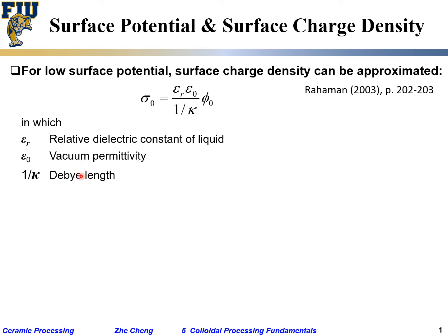We have the similar parameters that we defined: vacuum permittivity εᵣ, relative dielectric constant, and the Debye length, which is another way to say it's a rough measure of your double layer thickness, because it diffuses into the solution.